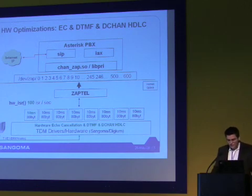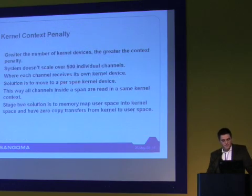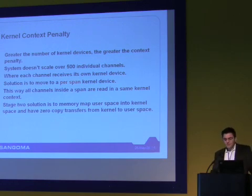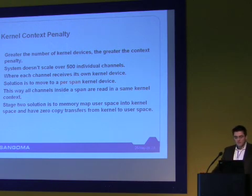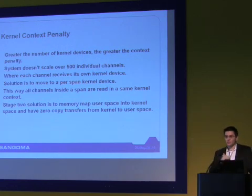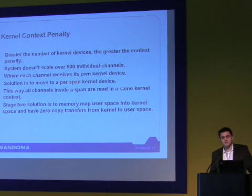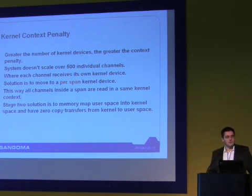At this point, from the hardware point of view, we have done as much as we could to improve hardware performance and put the stuff that needs to be in hardware in hardware. However, one big problem still exists: the kernel context penalty. The greater number of kernel devices, the greater the context penalty. The system doesn't scale over 500 individual channels — it's really an exponential curve. When you start pushing calls through, it just falls off at a certain point; the system load doesn't gradually increase. The solution would be a per-span kernel device, and saying something like that drastically changes the architecture.